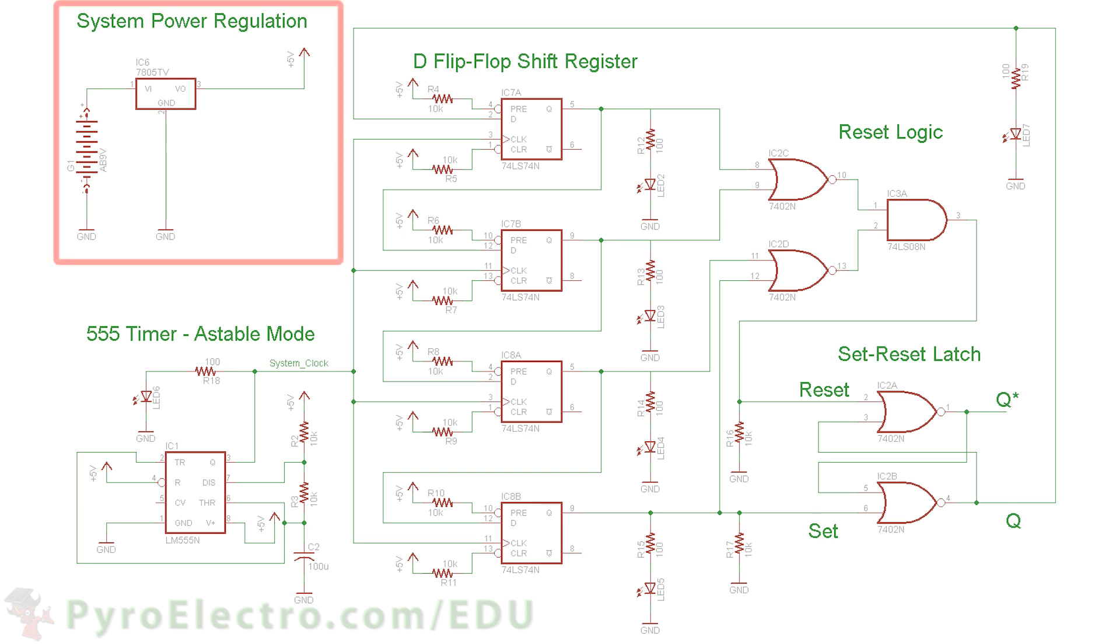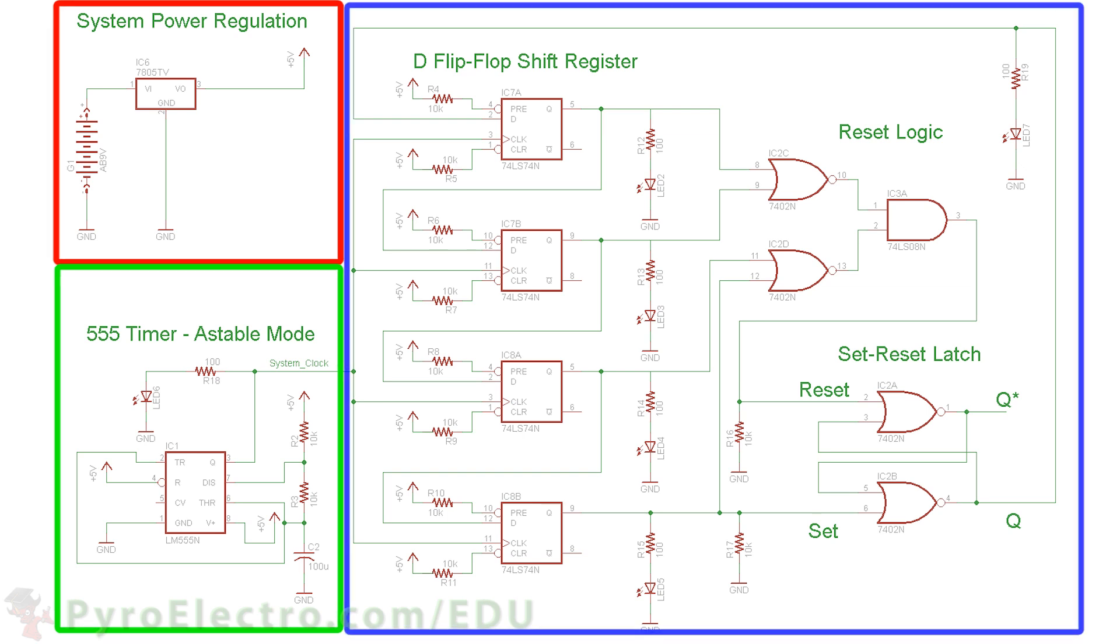The first two sections of the schematic are the familiar power regulation circuit and 555 timer in astable mode. The more interesting parts of the schematic are the 4D flip-flops forming the shift register, QD down here setting the SR latch, and then up here checking if all shift register outputs are zero to reset the SR latch.